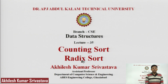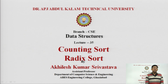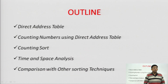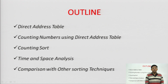Till now we have discussed sorting techniques which have time complexity of either O(n²) or O(n log n), but these two sorting techniques — counting sort and radix sort — will perform sorting in O(n) time, i.e., linear time. The outline of today's lecture: we will first discuss the direct address table, then see how counting sort is performed using it, do time and space analysis of counting sort and radix sort, and finally compare them with other sorting techniques.